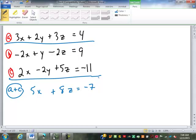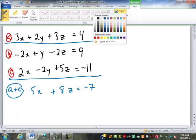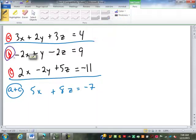Remember, the goal is to take it from three variables down to two variables, and then from two variables down to one. Now, I haven't used equation B yet, so I have to use equation B here somehow. But, I also have to eliminate Y, because that's what I eliminated in the first equation here. To eliminate Y in equation B, I'm going to multiply equation B times 2. So, it's going to be a negative 4X plus 2Y minus 4Z equals 18.